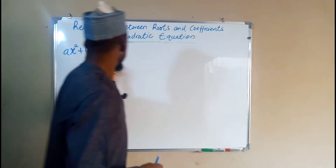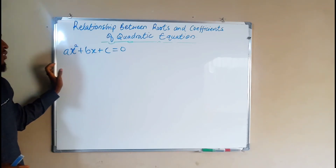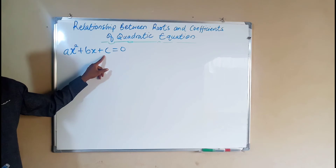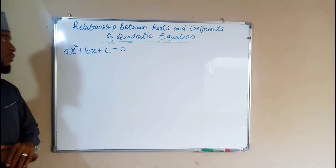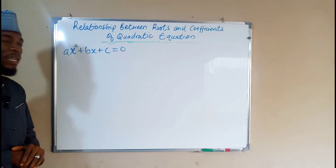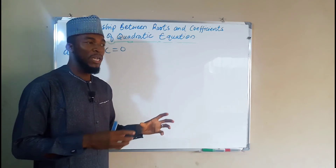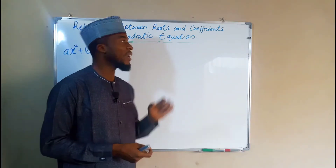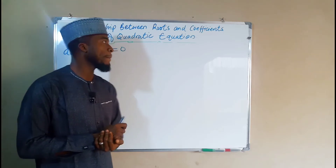This is the general form of any quadratic equation. When we say coefficient, we are referring to these real values a, b, c — they are the coefficients of this quadratic equation. And when we say roots, we are referring to the real solutions obtained after solving a particular quadratic equation.